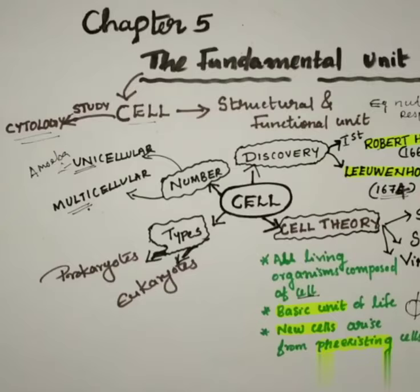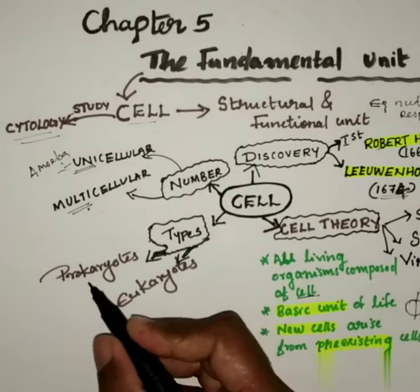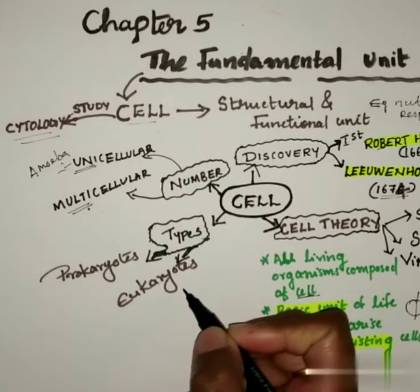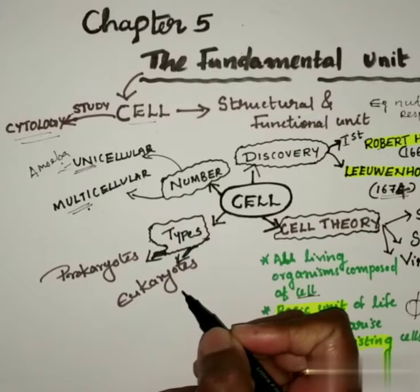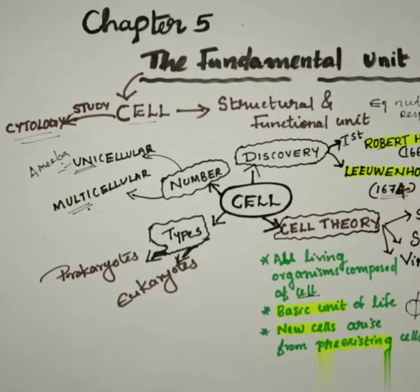On the basis of type, cells may be divided into two: prokaryotes and eukaryotes. This will be discussed in detail later.